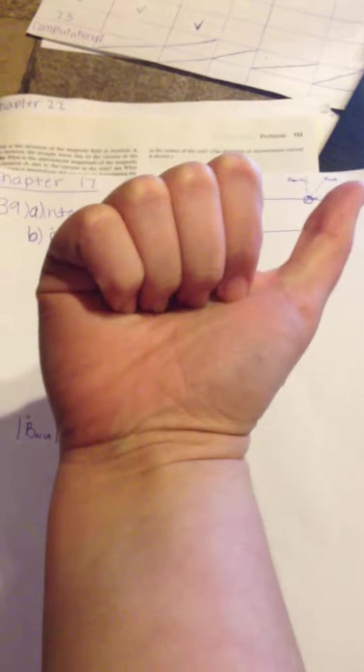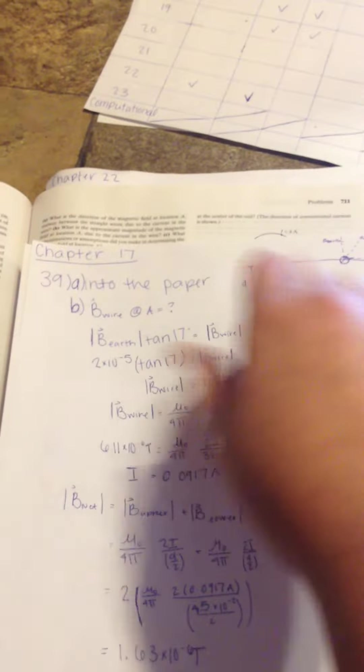So I've got my right hand here. I'm going to put my thumb towards north, and so we can see that it's going to be going into the page here. And even here, it's going to be going into the page, because A is there. I didn't draw that there, but that is there.